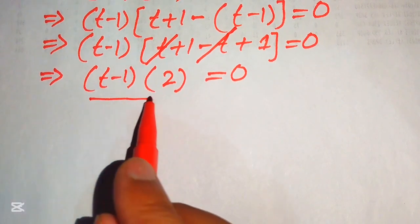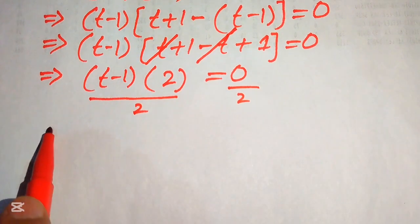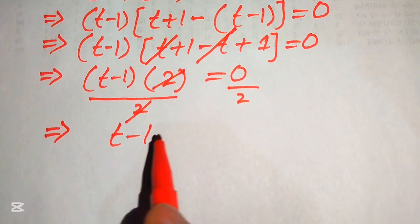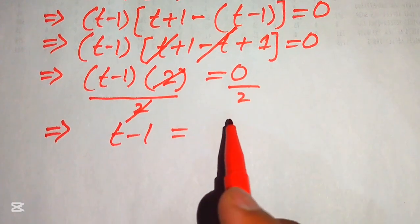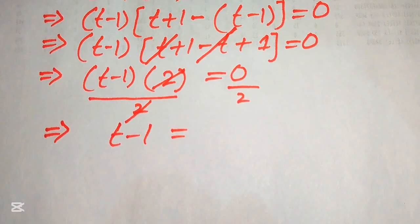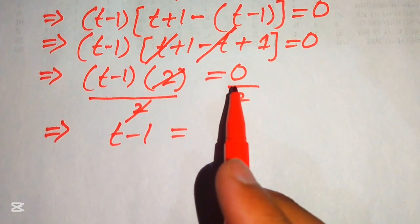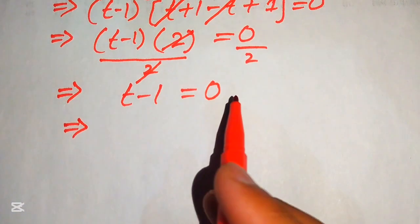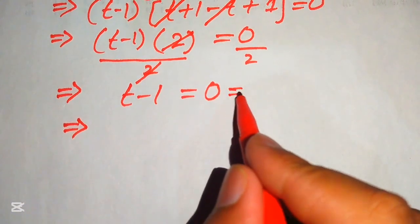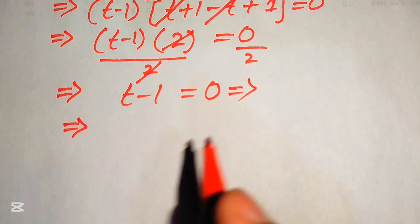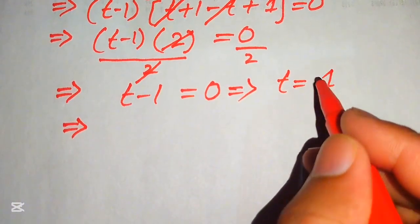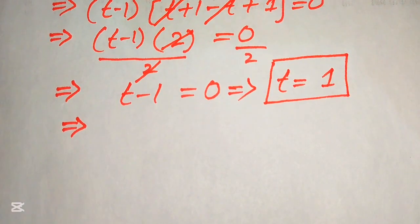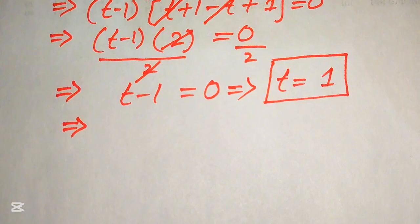We divide both sides by 2, the 2 cancels out, giving t minus 1 equals 0 over 2, which equals 0. Moving minus 1 to the right hand side, we get t equals 1. This is our final value of t.